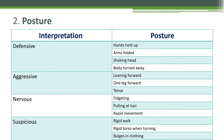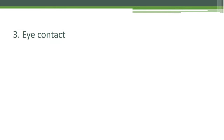Nervous posture — signs include fidgeting feet, pulling at hair, and rapid movement. Suspicious posture — the person shows a rigid back, rigid torso when turning, and bulges in clothing. As a CCTV operator you must be aware of people's posture and know the interpretation of each posture. Number three is eye contact.